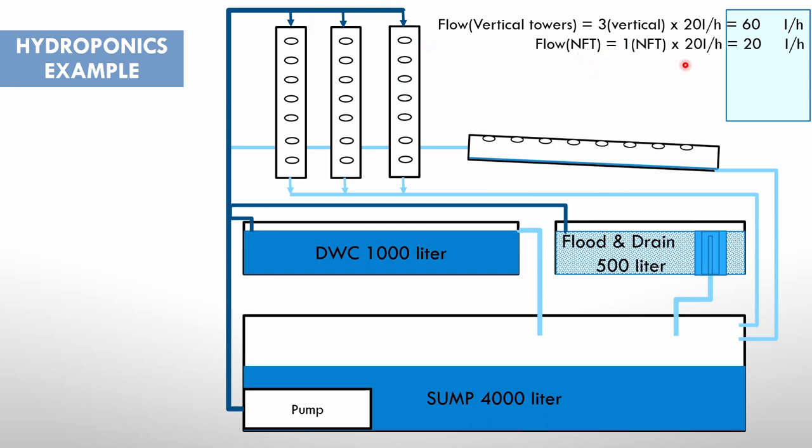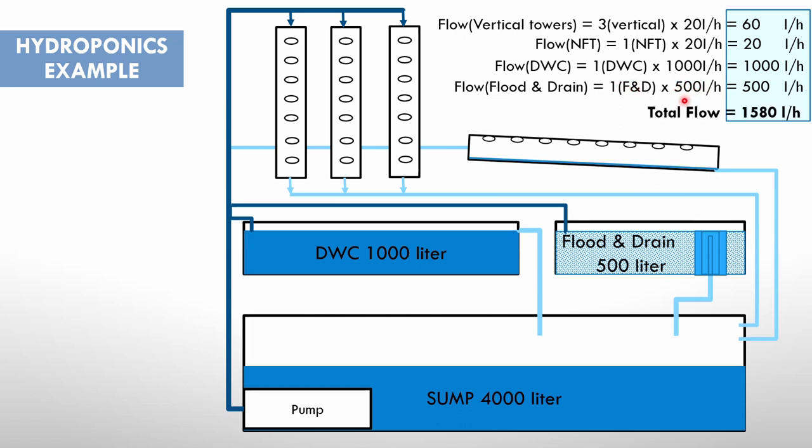So three times 20 will give us that 60 liters per hour for our vertical towers. Then we've got our NFT system, it's only one of them in this case at 20 liters per hour. Then we've got our deep water culture, which is one of them, and you can see the volume of this is 1000 liters. So it's 1000 liters per hour. Then you've got your flood and drain system, and the water amount in your flood and drain bed is 500 liters. So it's one times 500 liters, that will give us a total of 1580 liters for the system.